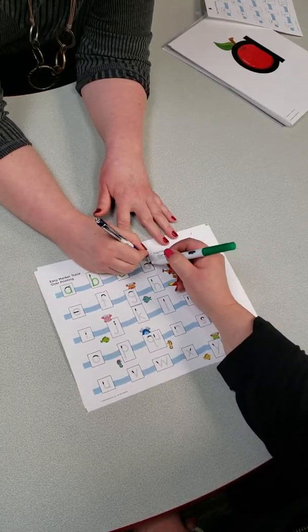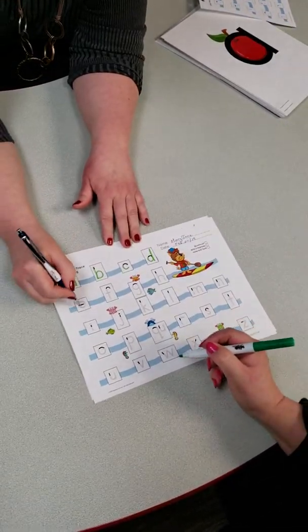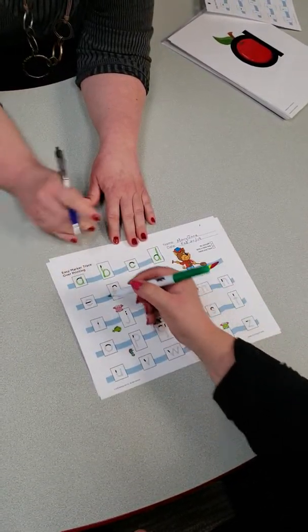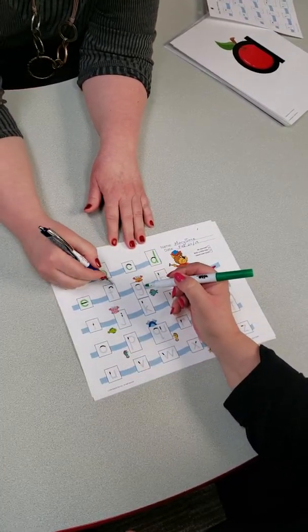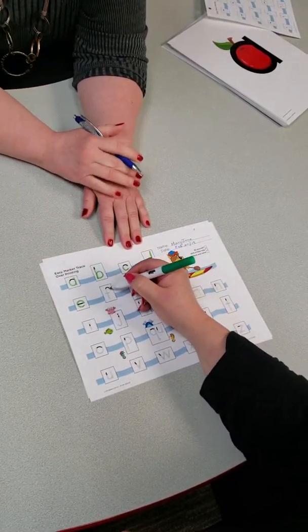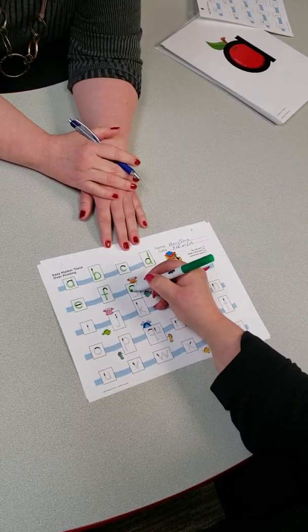D is for dinosaur. Beautiful! E is for elephant. Now if she's more advanced, you might not need to cue her, so you can try the next three by yourself. Beautiful.